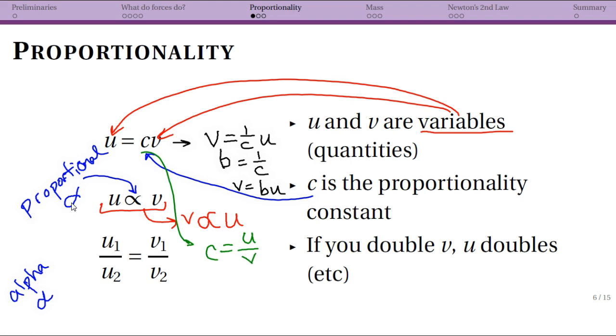Well since c is constant, if I have one value for u and one value for v, that must be equal to c. But if I have a different value for u and a corresponding different value for v...